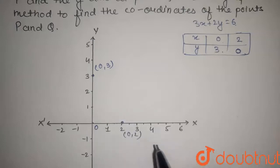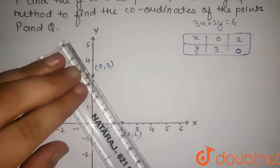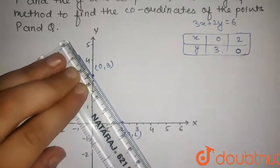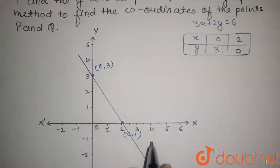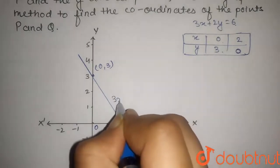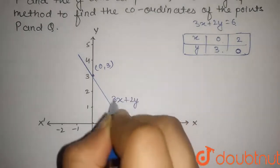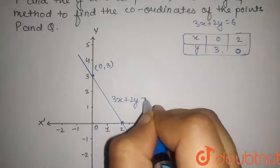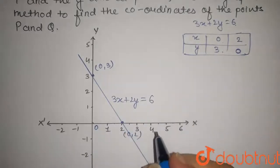(2, 0). Now if we join these two points, we get the graph. This is the graph of the line 3x + 2y = 6.